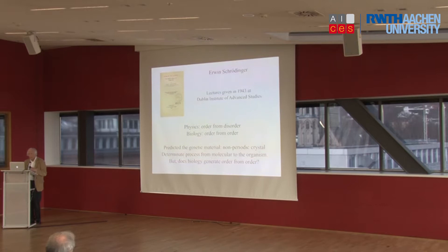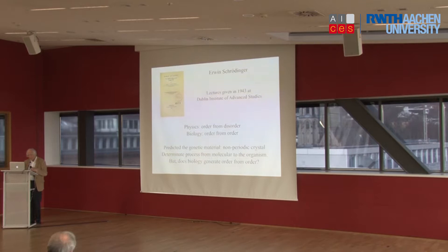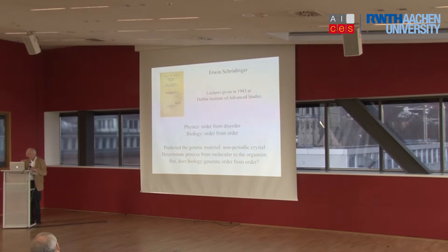Schrödinger thought that physics was simply order from molecular disorder — you have the random motion of molecules at the lower level, but you have beautifully smooth and accurate analysis at the higher level using the equations of thermodynamics. But then he said biology is completely different: it is order from order. Why did he say that? He used the analogy of a crystal. He thought that wherever the genetic code would be found, whether in proteins or DNA, it would be what he called an aperiodic crystal — a polymer — because data just repeated endlessly wouldn't be able to serve as the database from which an organism could be constructed.